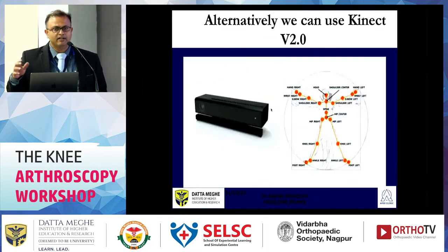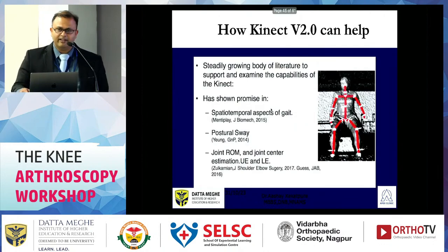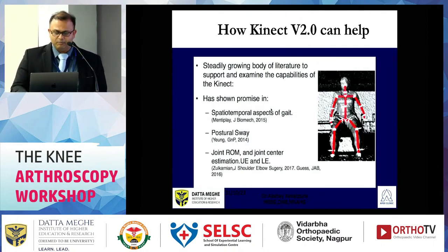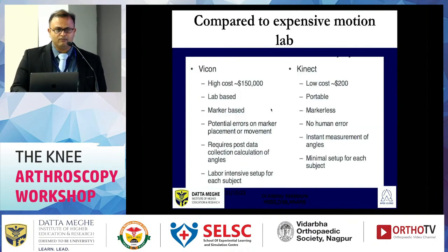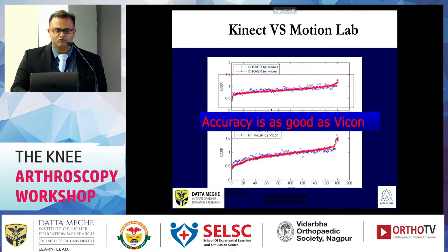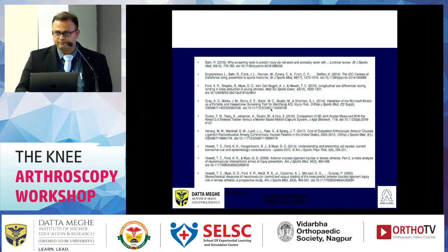As an alternative to these expensive prime-track systems, we looked at the Microsoft Kinect. Instead of the high cost of traditional gait labs, the Kinect costs almost 200 dollars and has the same accuracy as the icon system. We are working towards this solution. Thank you.